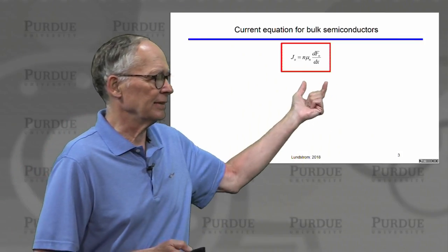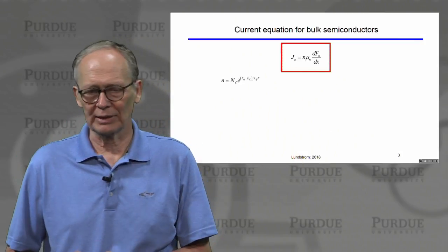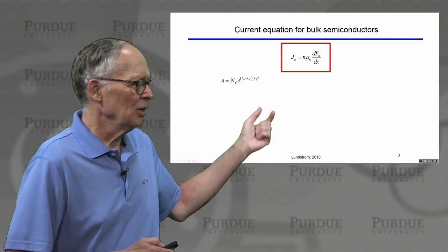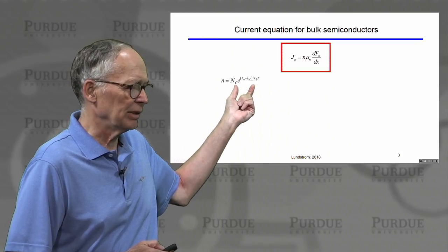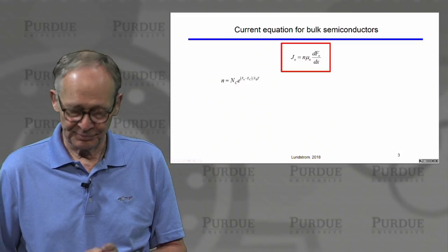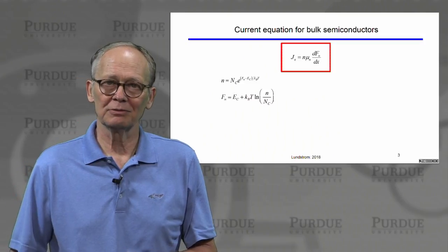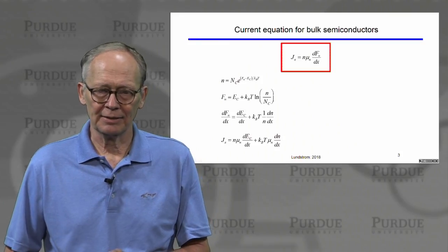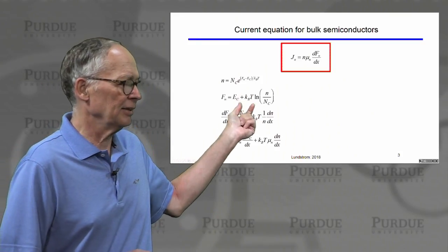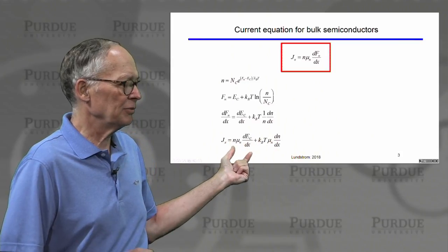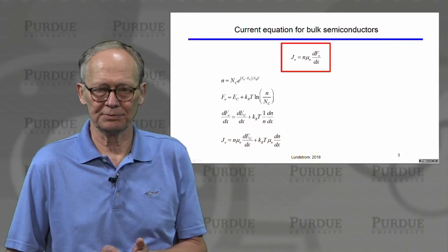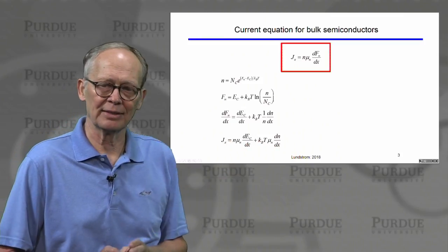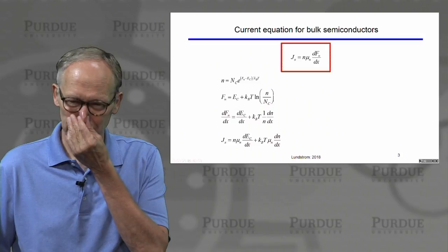The current equation is n·μ times the gradient of the quasi-Fermi level. We can re-express this equation with just a little bit of algebra. We know that the electron density is related exponentially to the quasi-Fermi level. I can solve for the quasi-Fermi level, take its gradient, and insert that into the current expression. Now I'll have two terms: one involving the gradient of the bottom of the conduction band, and one involving the gradient of the electron density.